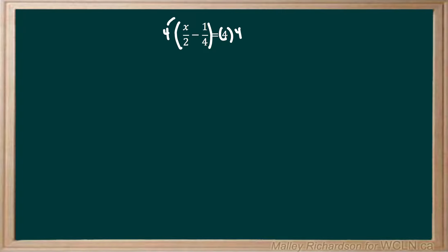Now we take this 4 and multiply it by everything inside the brackets. So 4 times x over 2 is 4x over 2 minus 4 times 1 quarter. Well, these 4s can cancel out and we're just left with minus 1. And all of that is going to equal 4 times 4, which is 16.